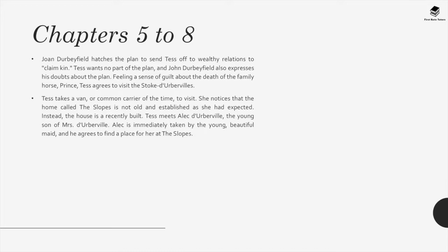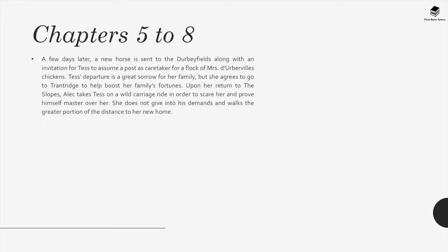Tess takes a van to visit The Slopes and notices the home is not old and established as expected, but recently built. She meets Alec D'Uberville, the young son of Mrs. D'Uberville, who is immediately taken by the young beautiful maid and agrees to find her a place at the slopes. A few days later, a new horse is sent to the Derbyfields along with an invitation for Tess to assume a post as caretaker for Mrs. D'Uberville's chickens. Upon returning to the slopes, Alec takes Tess on a wild carriage ride to scare her and prove himself master over her, but she does not give in to his demands.